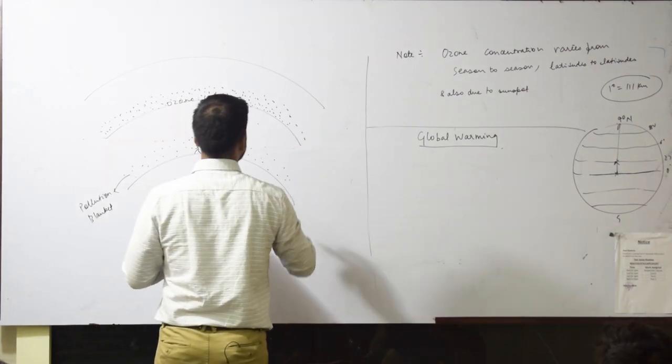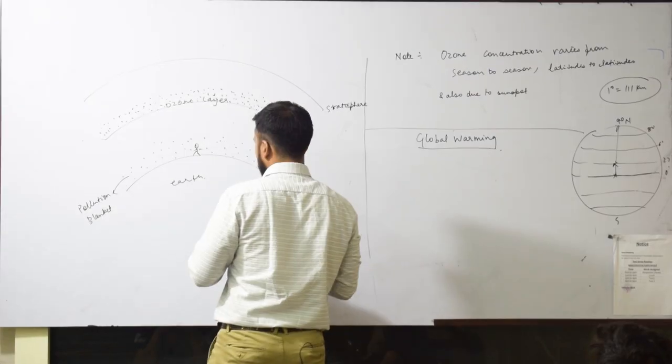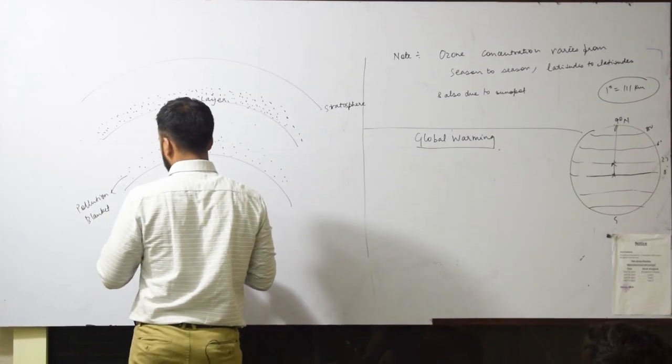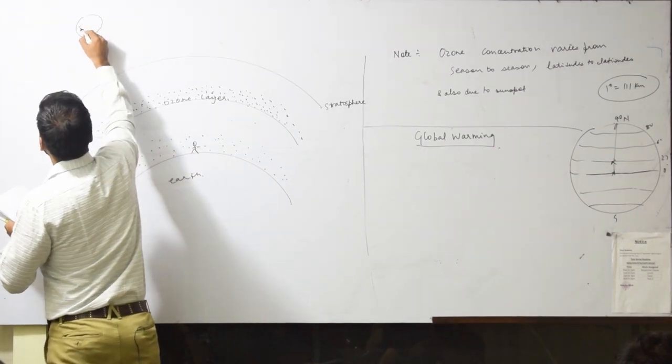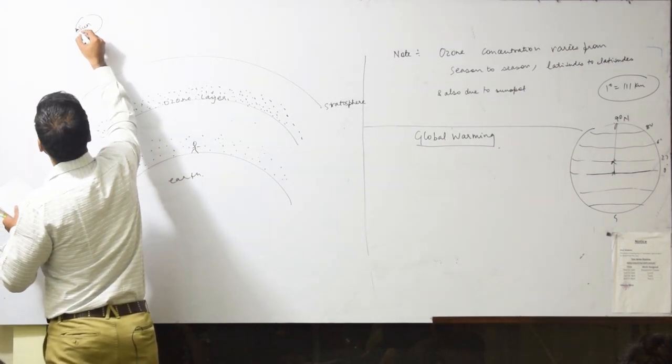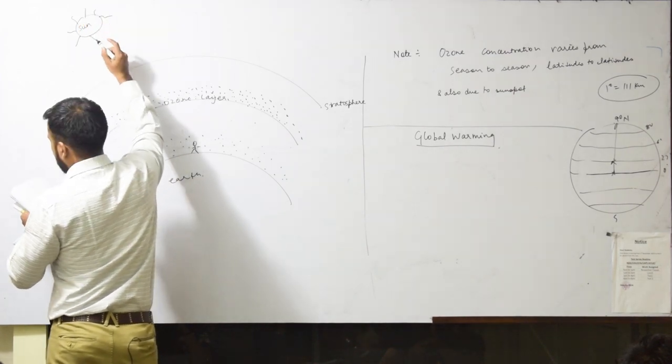This is your stratosphere. Delhi's location is such as other states' impact on Punjab. Sun. Again, here you can see.